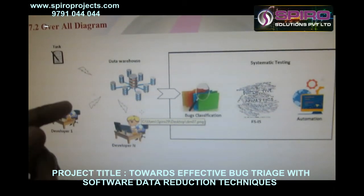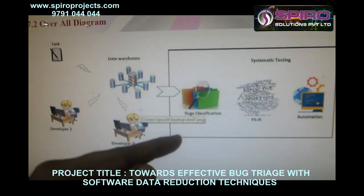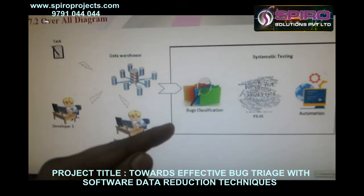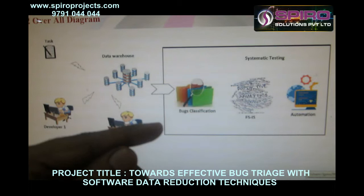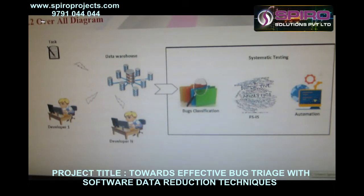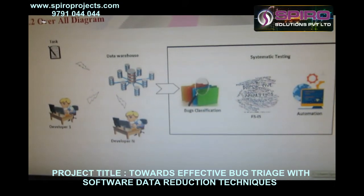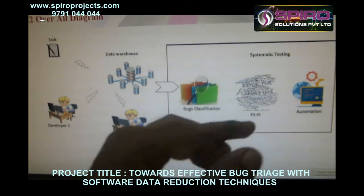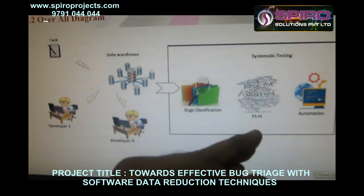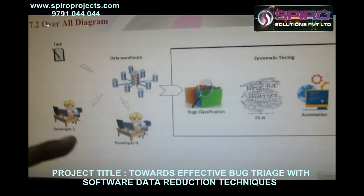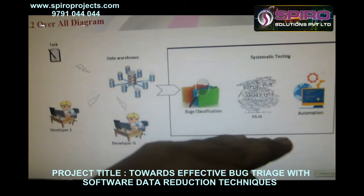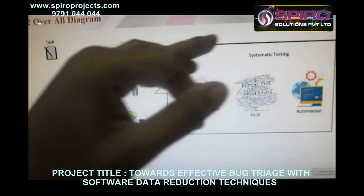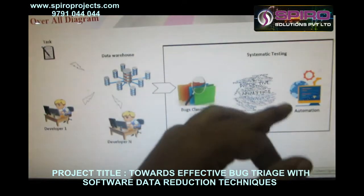Each and every task has been classified in the bug classification module. We classify the errors such as C-sharp oriented and SQL oriented errors, and also check the connections. Finally, the instances are classified and automatically reported to individual developers, who then clear the errors automatically. This happens at testing time.